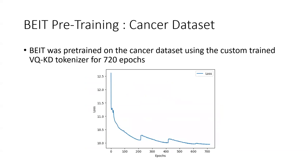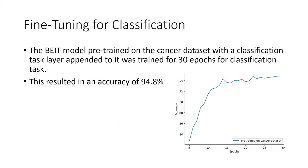For the cancer dataset, the pre-trained BEIT was pre-trained on the cancer dataset using the custom trained VQ-KD tokenizer for 720 epochs and the loss was calculated. As you can see it has converged to a point wherein it was flattened, so that's when we stopped training it.